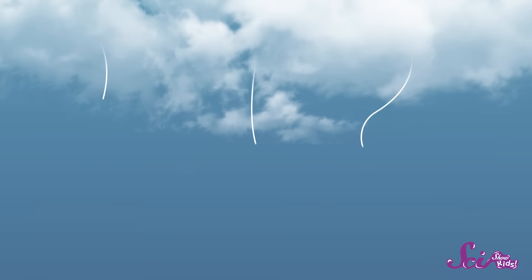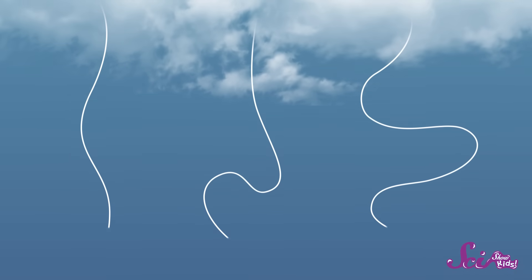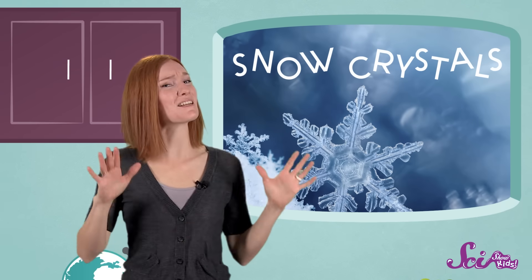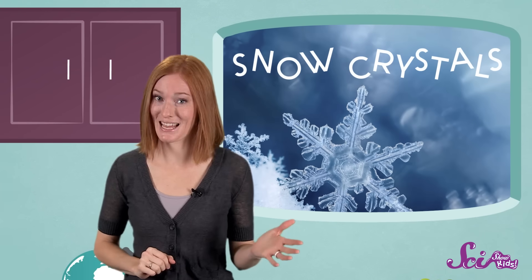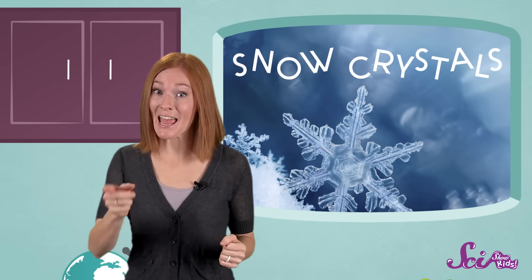Since each flake takes a different path all the way to the ground, each one ends up being slightly different. And that's why scientists say that no two snowflakes are exactly the same. But they're all really interesting, and beautiful!